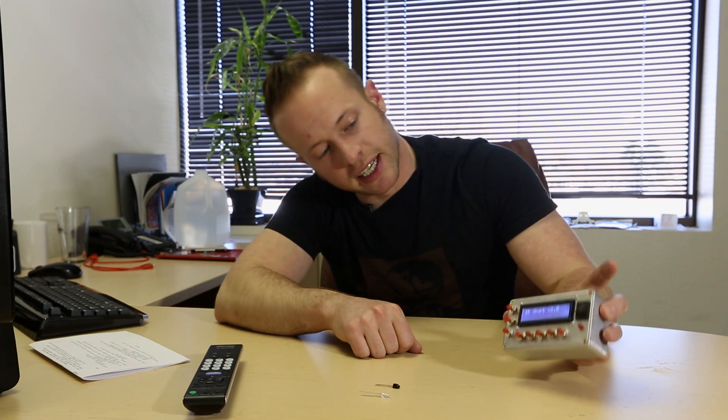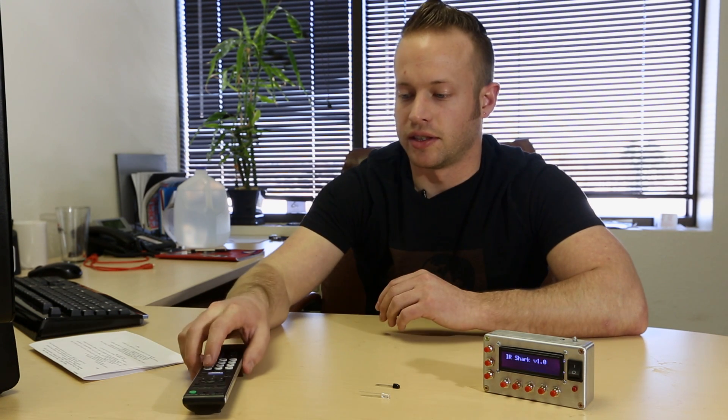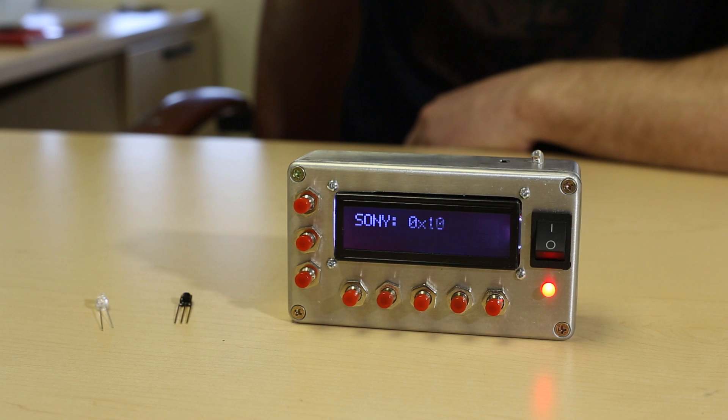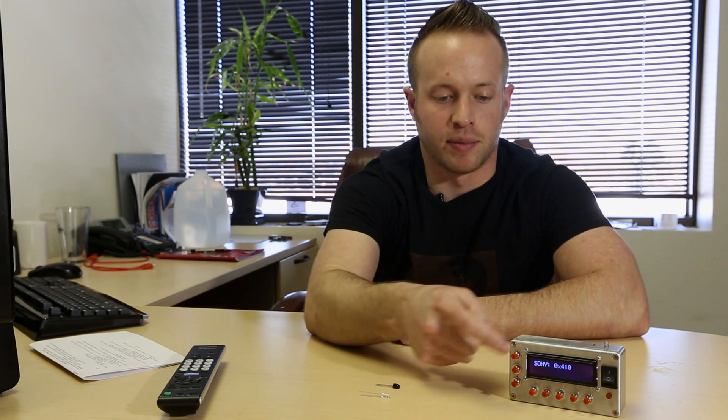When you turn it on, it sits and listens on its receiver diode for any infrared commands coming in. So when someone hits a button on a remote, it catches that command. In this case, it heard a Sony 0x410 command. And what it does is it then assigns it to one of these buttons to be retransmitted. And it'll sit and wait until it has eight commands and keep assigning them to the next button. Hopefully I will catch a channel up button or a power button. So whatever is being controlled in the room, I now have control of with the box.